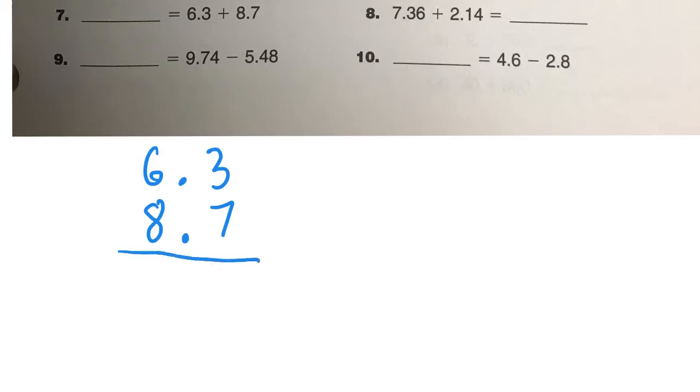And then you can just add like you normally would. So 3 tenths and 7 tenths is actually going to give me 1 whole. Or 10, but it's 1 whole. And then I have 1 plus 6 plus 8 is 15. And the decimal point stays. You don't even need to write 0.0, that's the same as nothing on that side. So the answer would just be 15. And the next couple I think you could do, or the next one at least on your own.